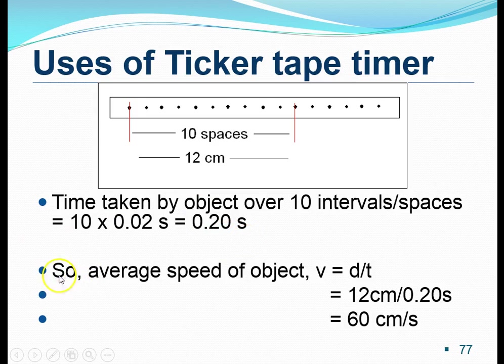Other common questions would be something like this. You'll be asked to find the average speed of this moving object. Well, average speed, as you know, we can calculate by using this simple equation of speed equals to the distance traveled divided by time taken. And the distance traveled between these 10 spaces would be 12 centimeters, and we divide that by the time taken for the ticker tape to make these 10 spaces. And that would be 0.20 seconds. By using a calculator, we will find that this tape is being moved at a speed of 60 centimeters per second.